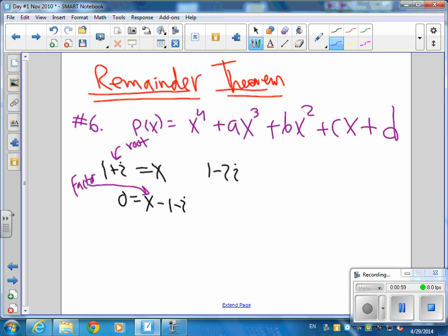Now, there's a rule that says that whenever you do complex roots, the factors come in pairs, and they're called conjugate pairs. So here's x minus 1 minus i.